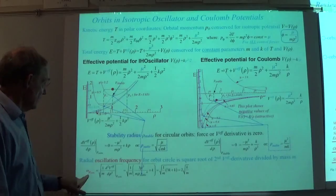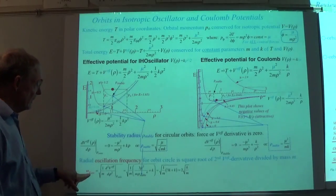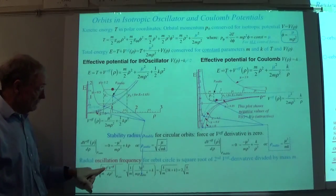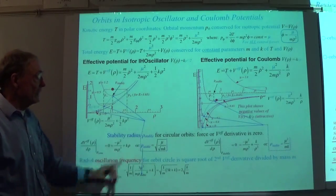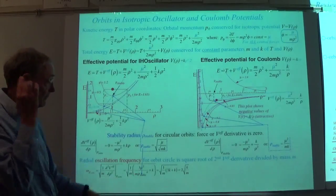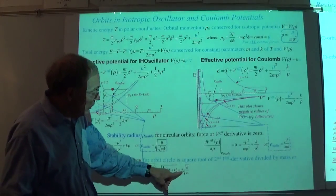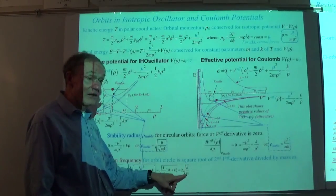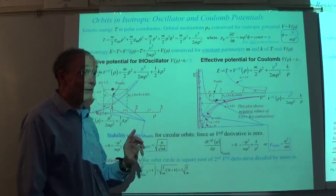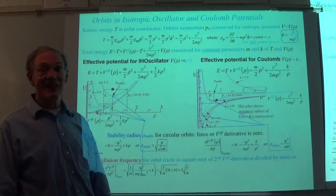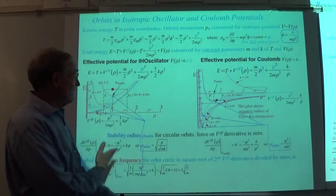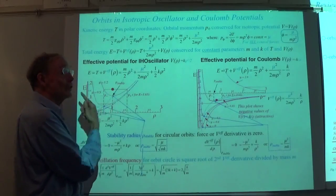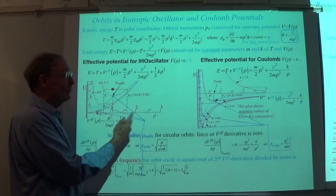The idea is to calculate a frequency by taking inverse inertia times the double derivative of the potential at the stable point. When you do it for this one, you get two times what you'd expect for a harmonic oscillator. And that two is what's pretty cool — this one does two radial oscillations per rotation, whereas the Coulomb does only one.